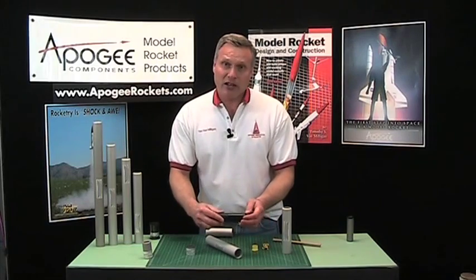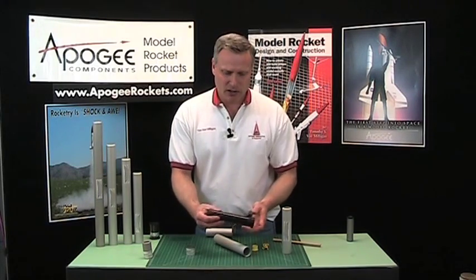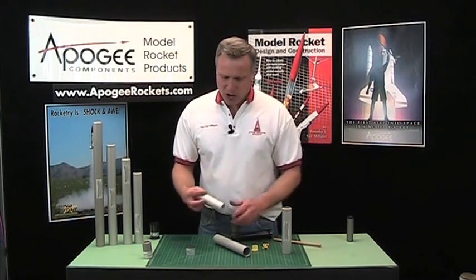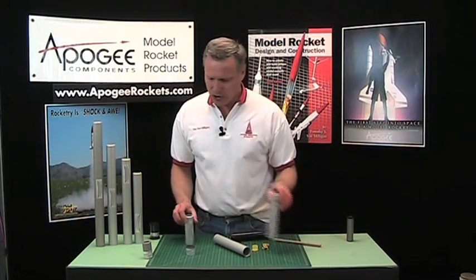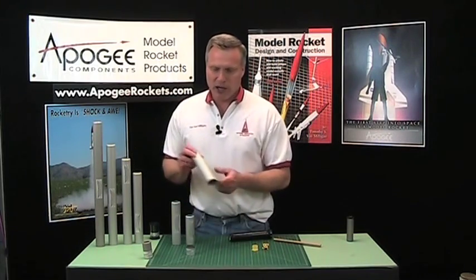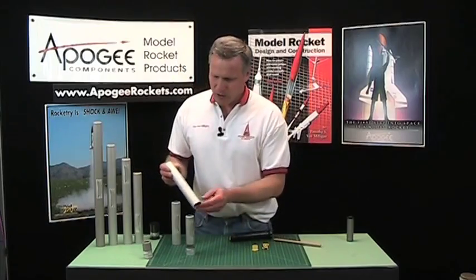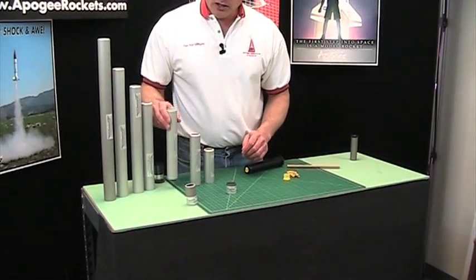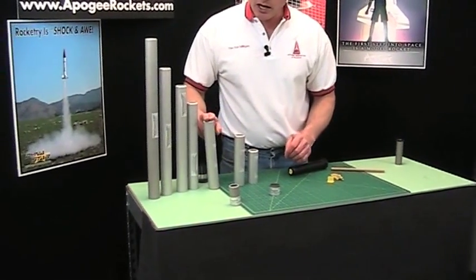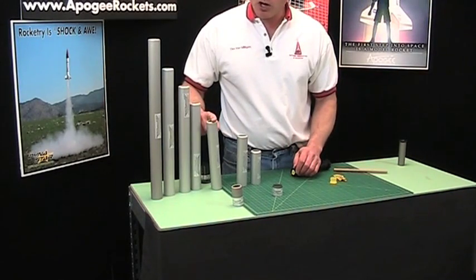So that's basically it on selecting the motors. In the one grain case you'll have your G motor. The two grain is an H motor. Three grain is big H's and I's. These are small I's.